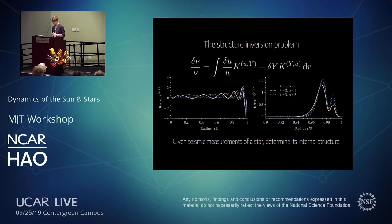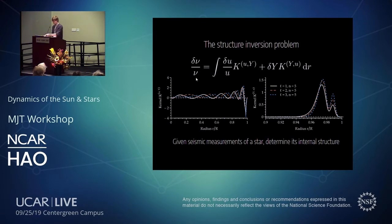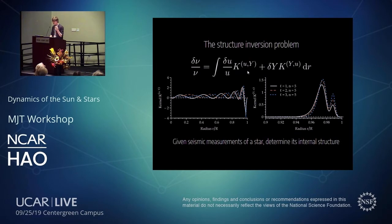We want to compare the best-fitting model to the observed star and infer from frequency differences what the differences are in the internal structure. Each mode gives one equation. The relative difference in mode frequency is expressed as an integral adding up differences over the internal structure — specifically the relative difference in the isothermal speed of sound — weighted by a sensitivity kernel. The kernel tells us: if the speed of sound changes in the stellar interior, how would this mode's frequency change? I've shown some example kernels below.